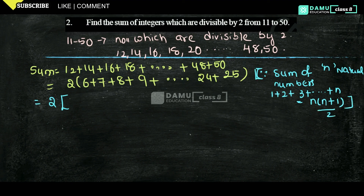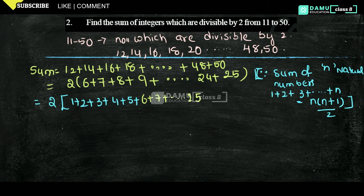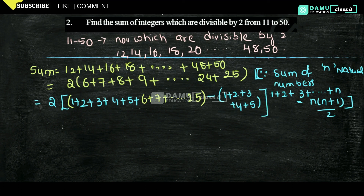The strategy is: take (1 plus 2 plus 3 plus 4 plus 5 plus 6 plus 7 plus 8 plus and so on plus 25) minus (1 plus 2 plus 3 plus 4 plus 5). This way, the first five terms cancel, leaving us 6 plus 7 plus up to 25. In the first statement n equals 25, and in the second n equals 5.